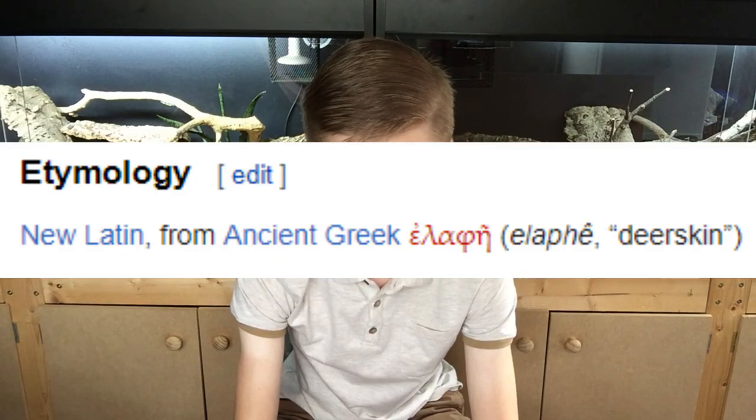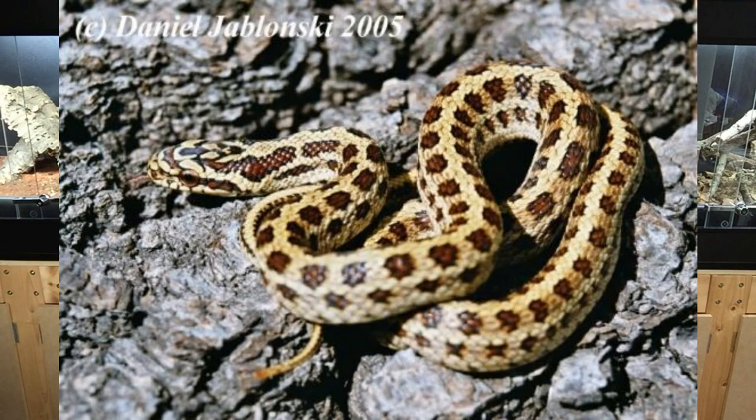The genus Elaphe is used quite often with many of the rat snakes. Corn snakes were recently grouped in Elaphe but moved out into the genus Pantherophis. The etymology of 'Elaphe' comes from the Greek term for 'deer skin'. The specific name bimaculata was first coined by Schmidt in 1925 — 'bi' meaning two, and 'maculata' referring to spotted, bringing us on to common names.